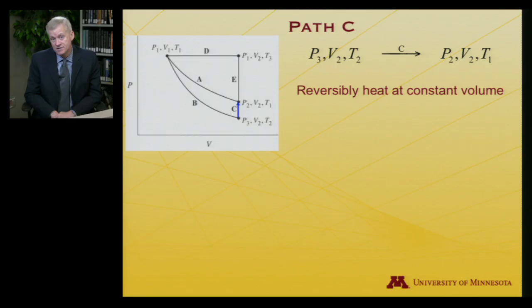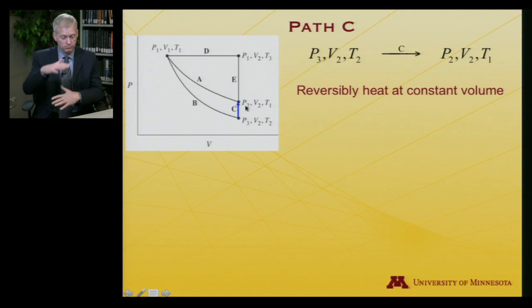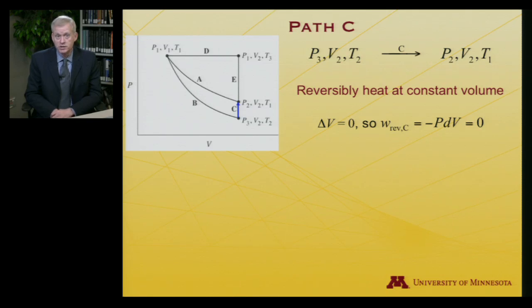So now let's do path C. Path C, which will get us back to the final place we want to get to, this is our other road to get to the same destination. I'm going to reversibly heat at constant volume. So I'm just going to put heat into the system in order to increase the pressure, but it's in a fixed volume, some container that is rigid. Well, given that delta V is equal to zero, work must be zero, because work is -P_external dV, and there's no dV here. dV is zero, so the work is zero.